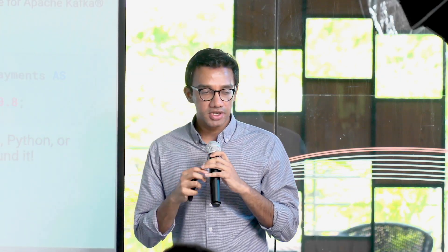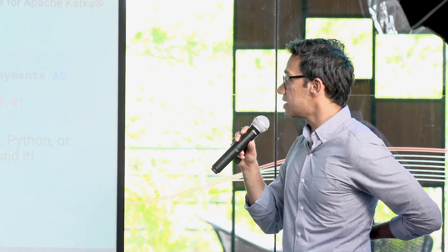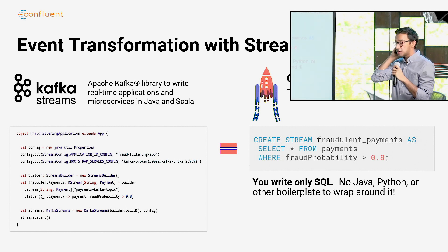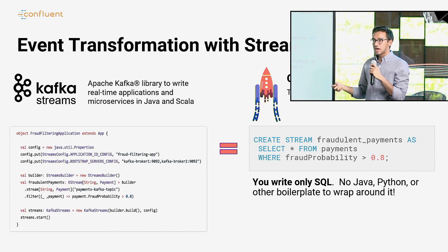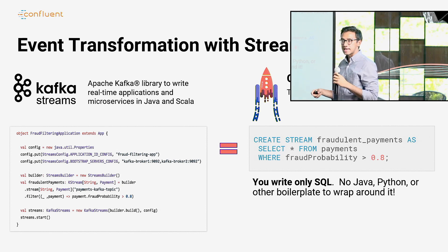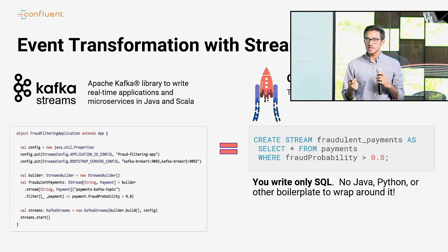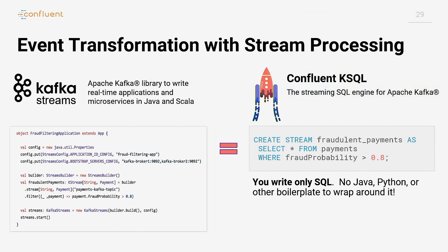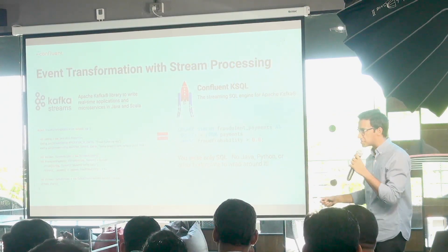There are two ways to do stream processing in Kafka. The first is Kafka Streams — a Java SDK or library that you embed directly into your applications. There's no separate processing cluster. This allows you to do complex stateful and stateless stream processing. Stateful includes aggregates and joins where you need to remember and maintain state. Stateless includes things like filters — for example, if you want to filter events where a probability is greater than 0.8, you can do that in real time using Kafka Streams.